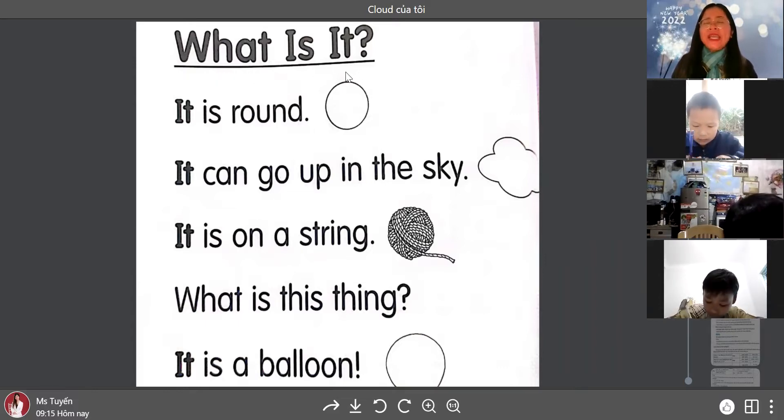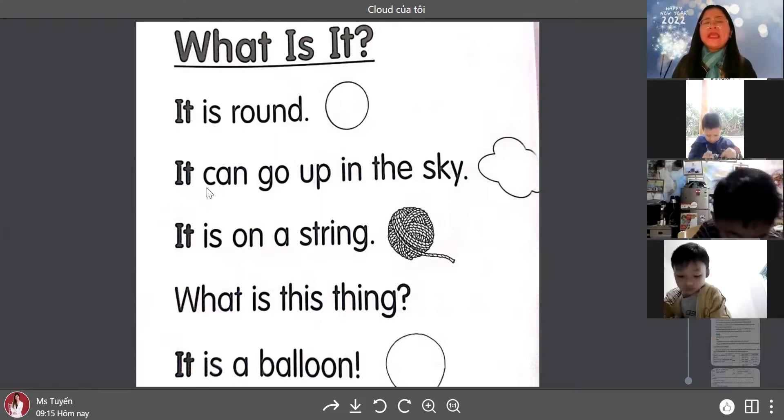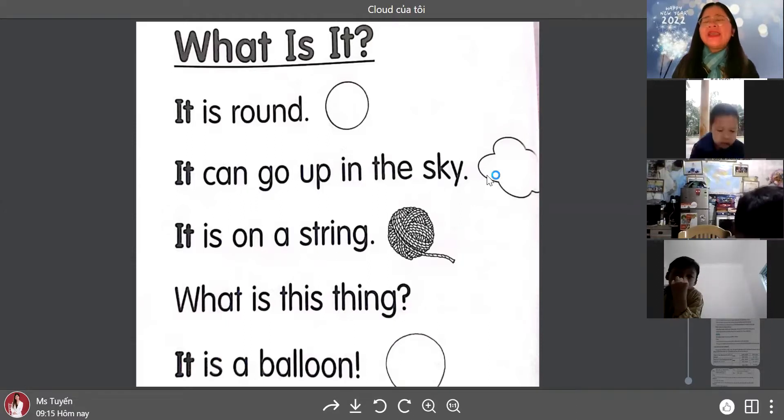What is it? What is it? It is round. It is round. Round. Round. It can go up in the sky. It can go up in the sky. It can go up in the sky. Sky. Sky.